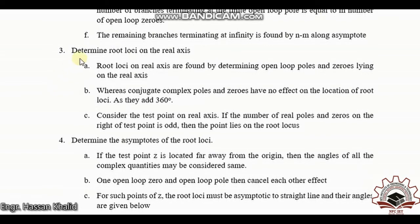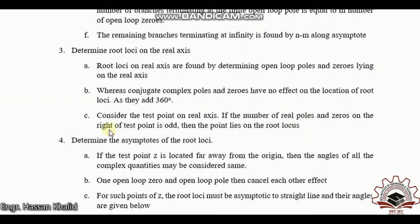In the third rule, determine the root loci on the real axis. Root loci on the real axis are found by determining the open loop poles and zeros lying on the real axis. Conjugate complex poles and zeros not on the real axis have no effect on root loci location because they add an overall 360° angle contribution. Consider a test point on the real axis: if the number of real poles and zeros to the right of the test point is odd, then that point lies on the root locus.